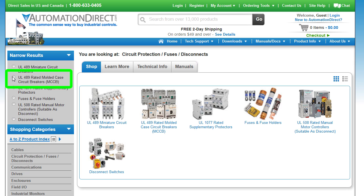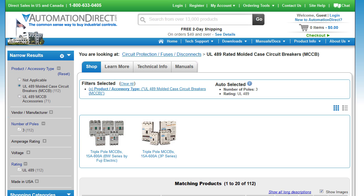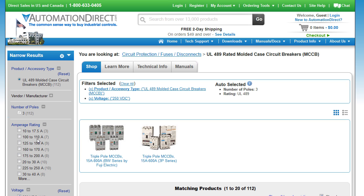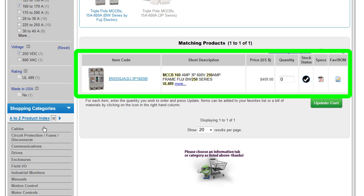We'll choose the MCCBs and now we can specify we want everything or just the circuit breakers or just the accessories. Let's select circuit breakers and now we just choose the voltage we want to operate at and the number of amps we need. And just like that, I'm down to the exact part number I need.